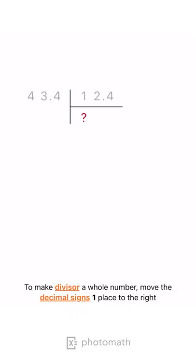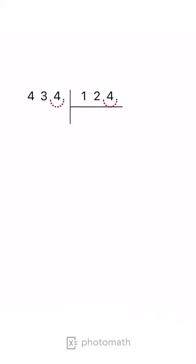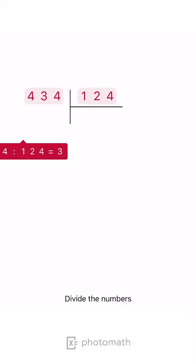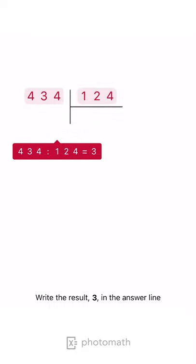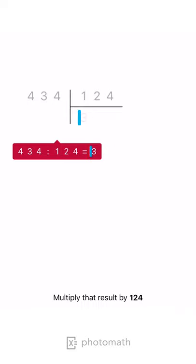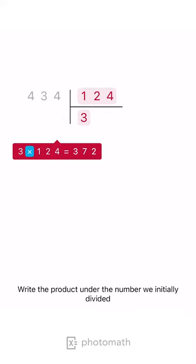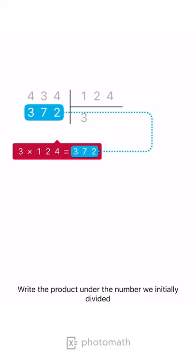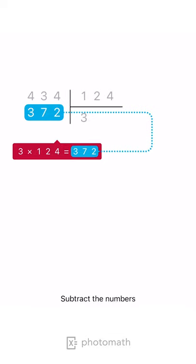To make the divisor a whole number, move the decimal sign one place to the right. Divide the numbers. Write the result, 3, in the answer line. Multiply that result by 124. Write the product under the number we initially divided. Subtract the numbers.